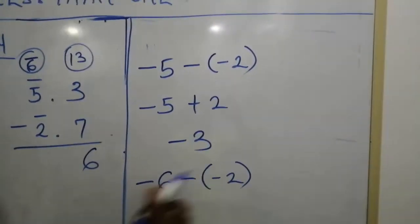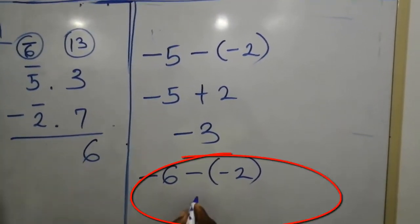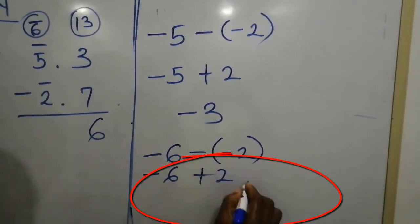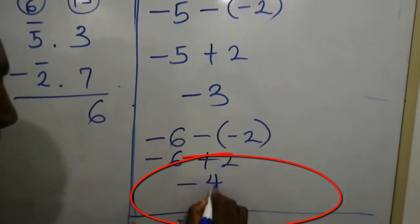Sign of the same. That is minus multiplied by minus, that will give us plus. That's minus 6 plus 2. Minus 6 plus 2, that will give us minus 4.